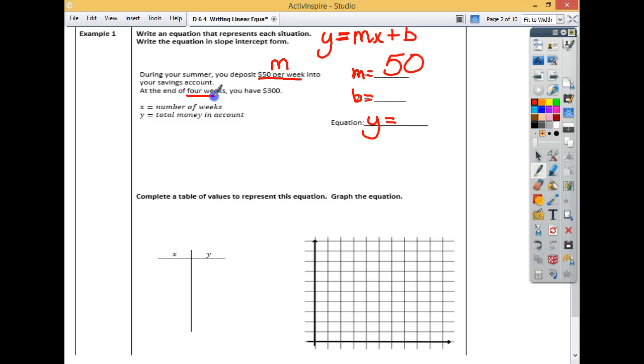At the end of four weeks, you have $300. Do we know where it intercepts the y-intercept yet? No. So what do I know? I know my slope, and then I know that I have one ordered pair here. My x and my y. I have on the fourth week it was $300. Here's my x, here's my y. By what's given to you, by looking at this, we still don't know the b yet. We don't know where it crosses our y-intercept.